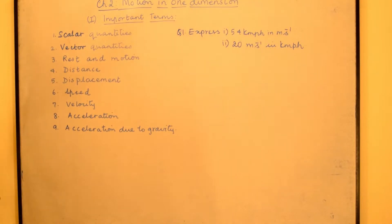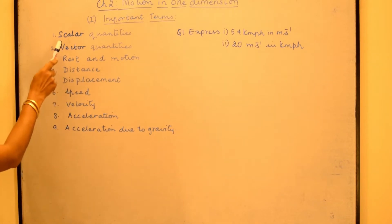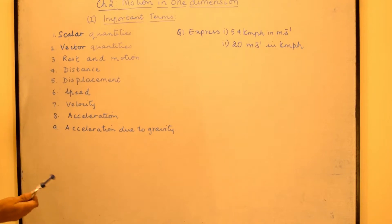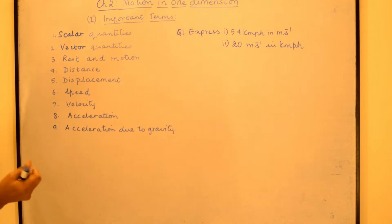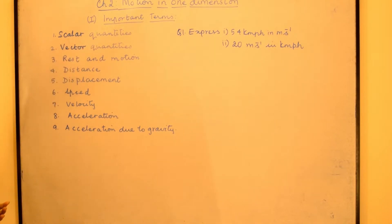In this particular chapter, we will deal with first the scalar quantities, then the vector quantities. These two terms we have already seen in the earlier classes. Scalar terms are when the quantity has only the magnitude and no direction. For example, if I am going to the grocer's shop and buying 1 kg potatoes, 1 kg has only the magnitude — how much of the quantity? 1 kg. It doesn't need direction. So that becomes a scalar quantity, the mass of the potatoes.